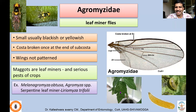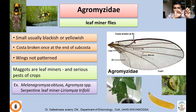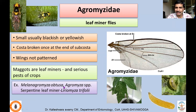Next, family Agromyzidae — leaf miner flies. You may have seen leaf mines on cucurbits, tomato, and many other crops — these are caused by agromyzid flies. They are very small, usually blackish or yellowish flies. The characteristic feature is the costa broken once at the end of the subcosta — it is not continuous. Unlike Tephritidae, wings are not patterned. Maggots are leaf miners and serious pests of crops; some even attack seeds. Example: the serpentine leaf miner Liriomyza trifolii.